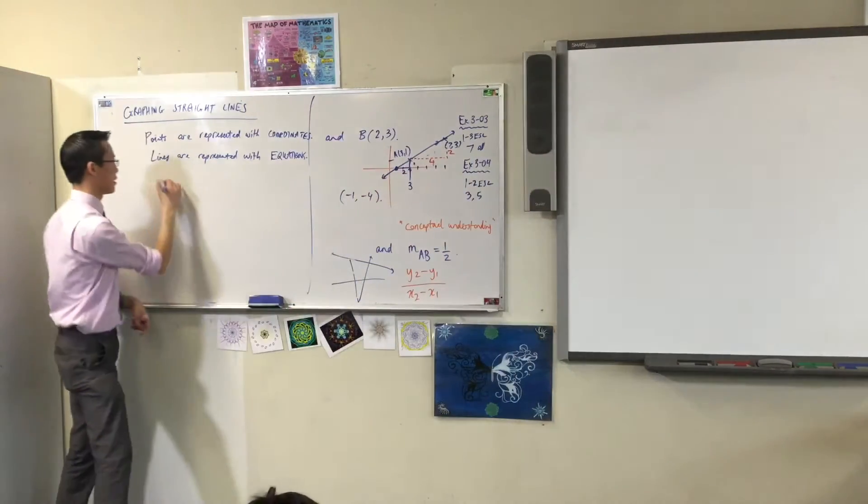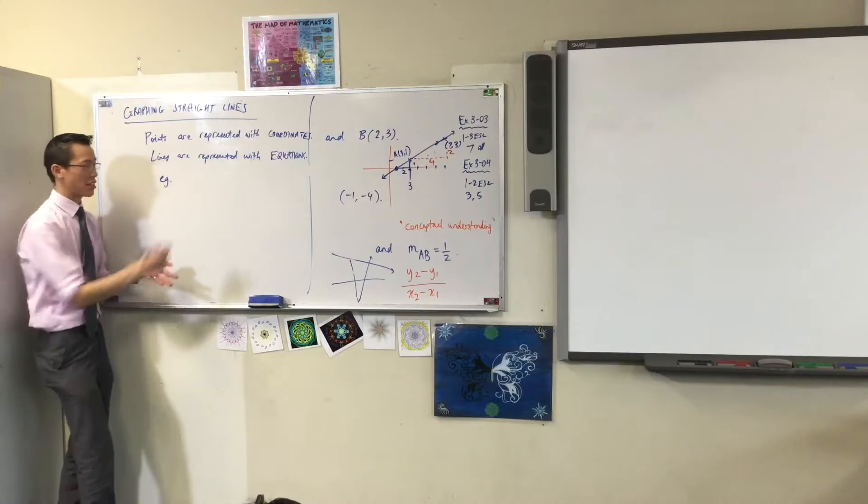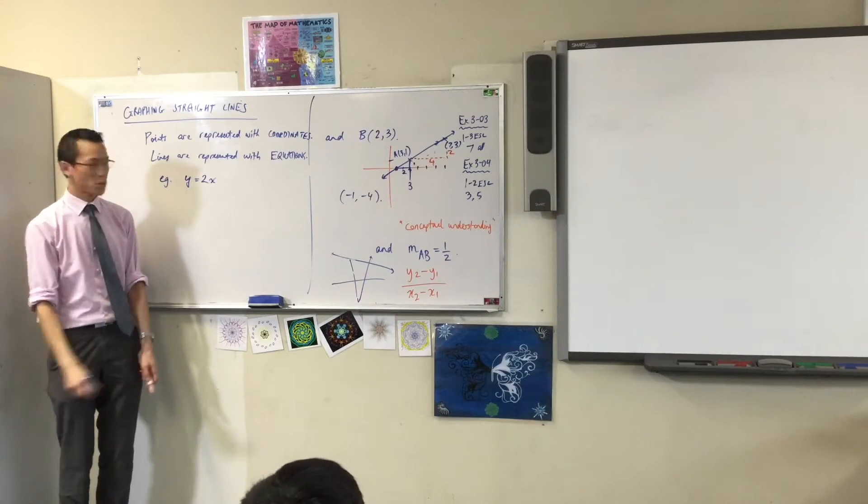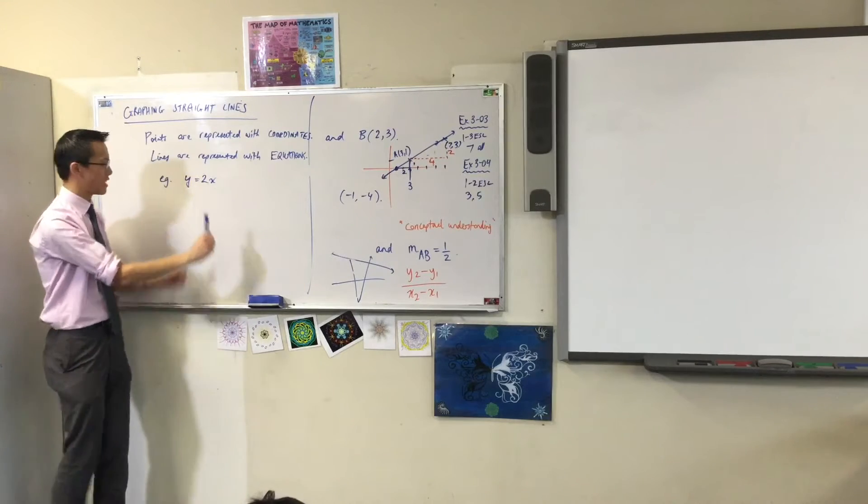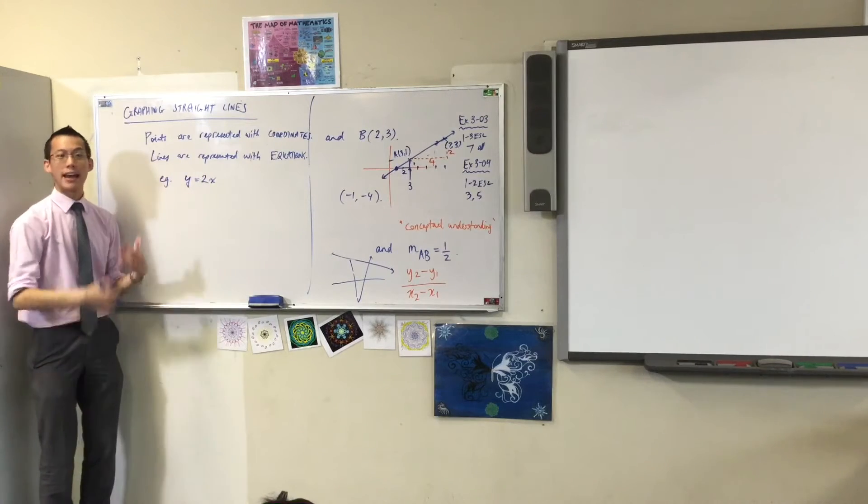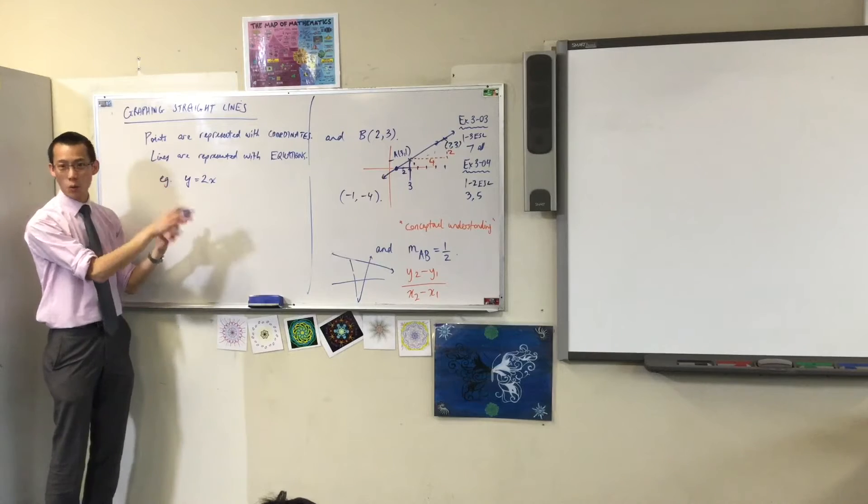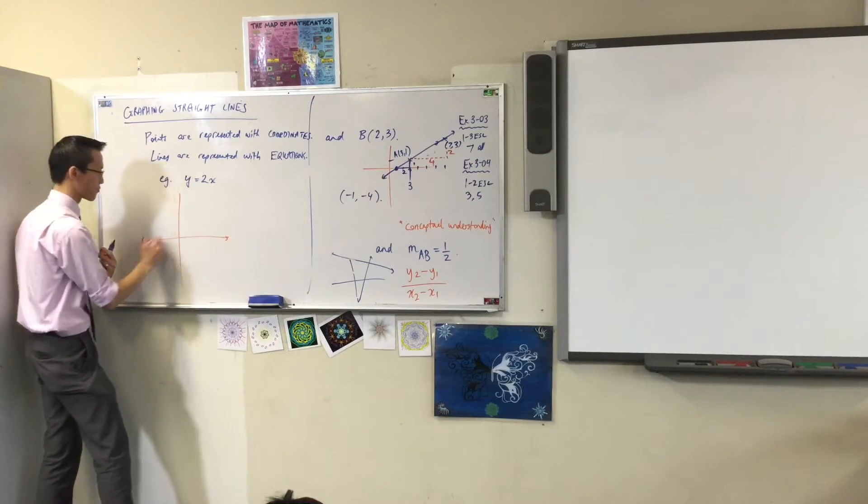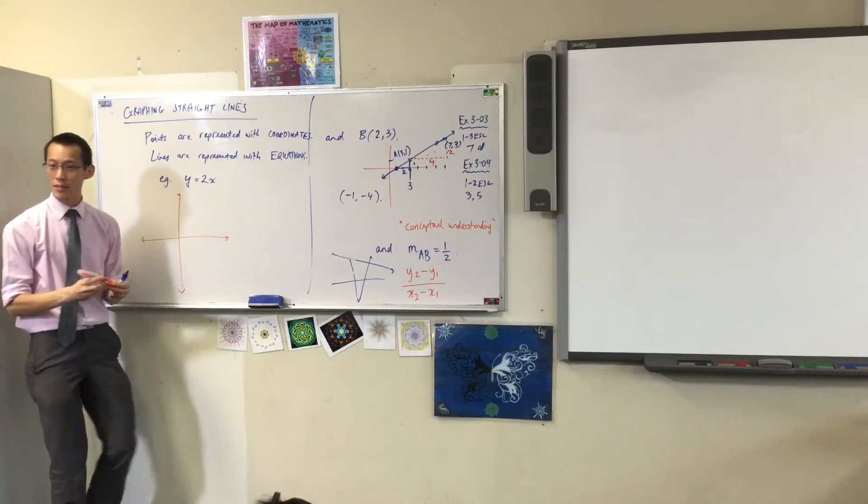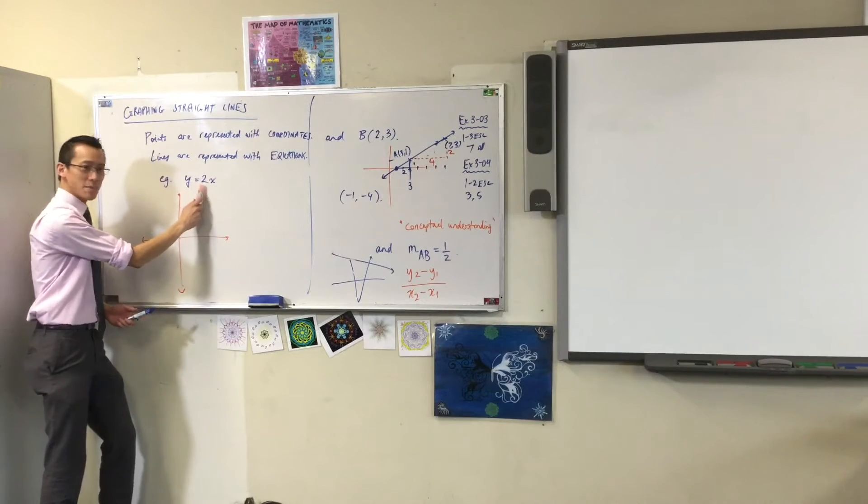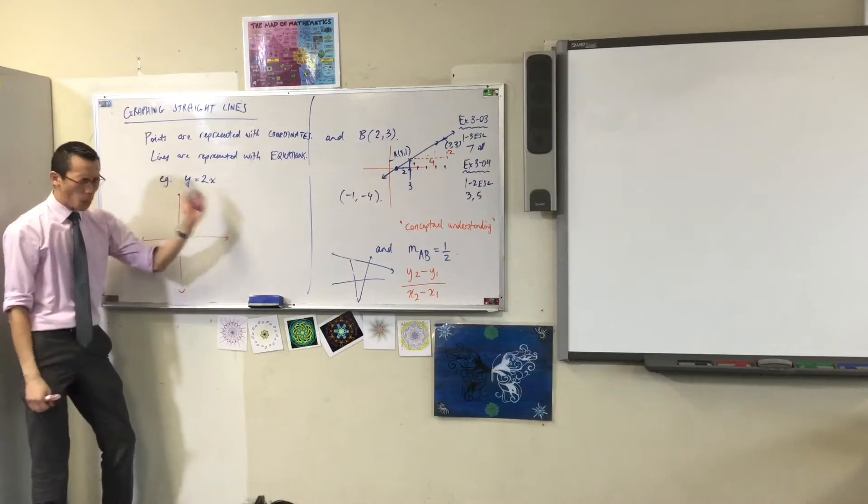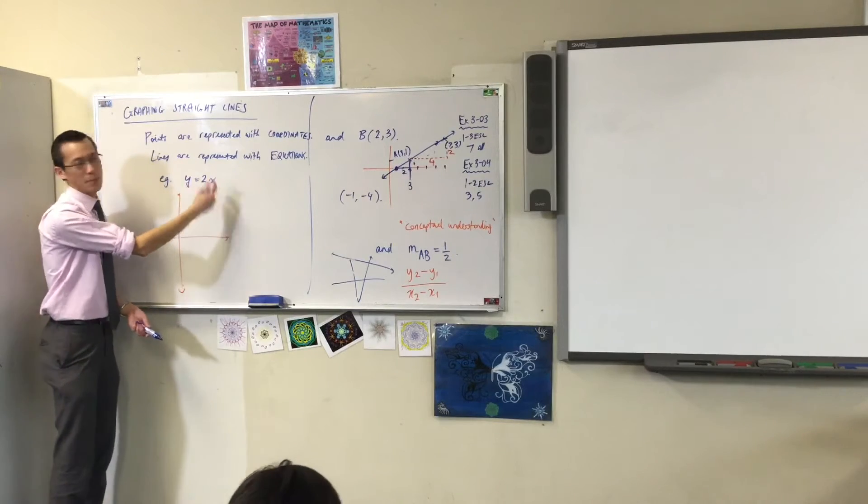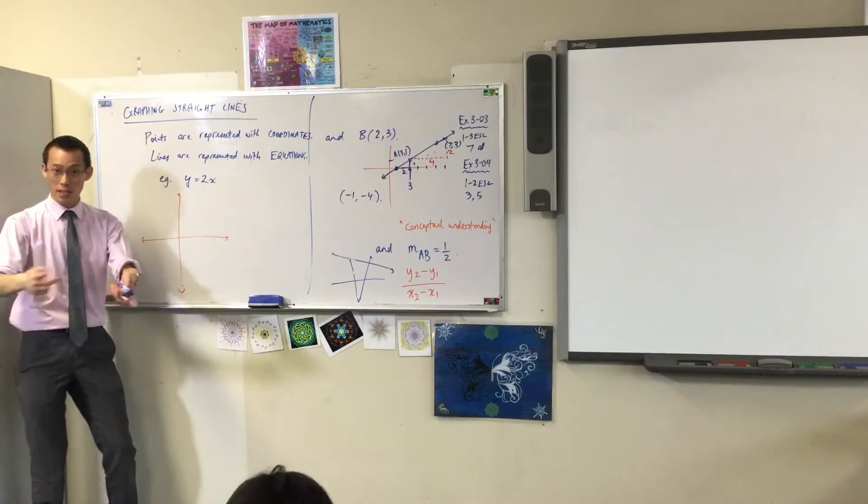So as an example, I could say Y equals 2X. So this is an equation, it's got X's, it's got Y's in it, and I can represent a line with it. Let's represent that line together, just to refresh your memory. If you've got your axes set up, what this means is, this is all the points where the Y value is twice as big as the X value. And you can actually think of these points.